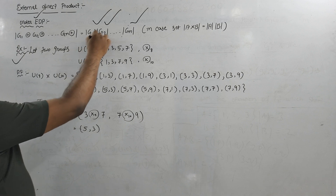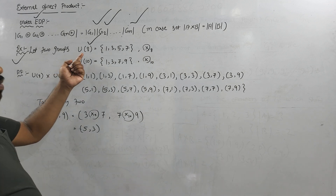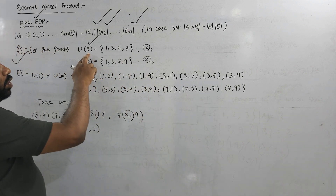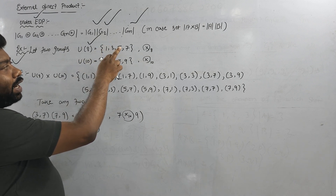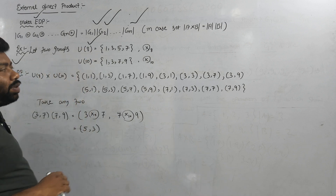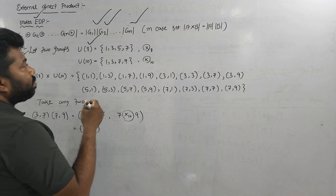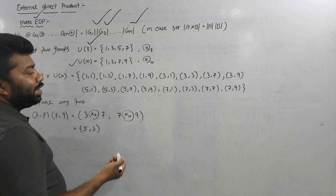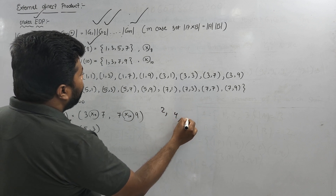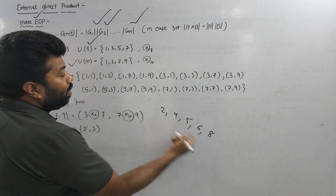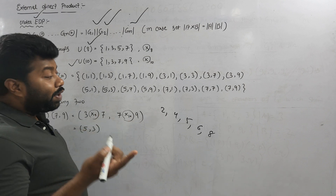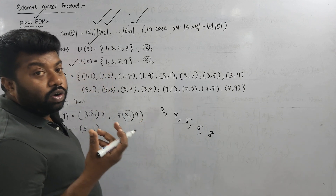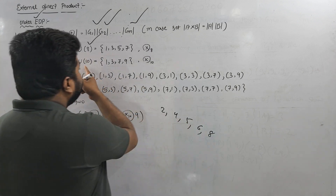For U8: elements are those whose GCD with 8 equals 1, so U8 = {1, 3, 5, 7}. For U10: elements are those co-prime to 10, so we check — GCD(1,10)=1, GCD(3,10)=1, GCD(7,10)=1, GCD(9,10)=1 — giving U10 = {1, 3, 7, 9}. These form multiplicative groups.